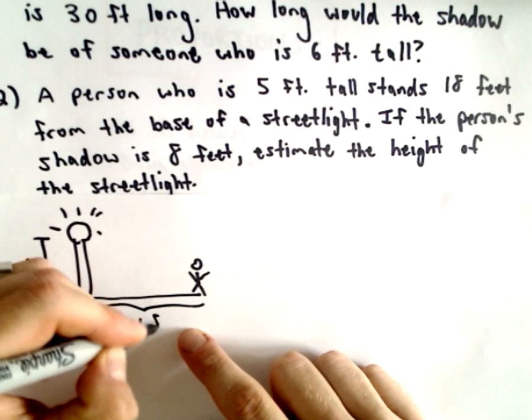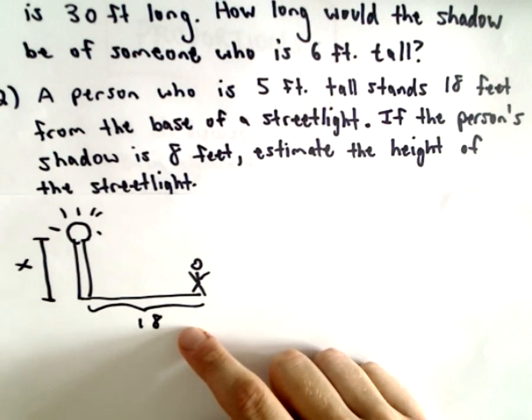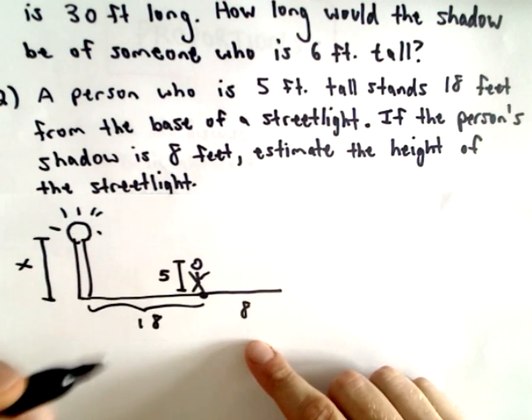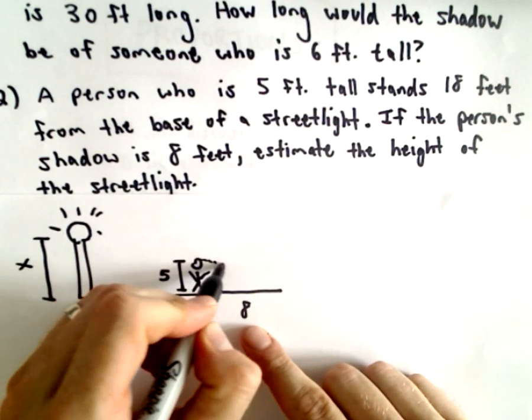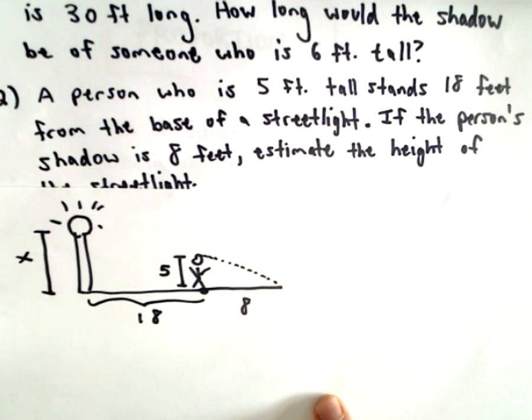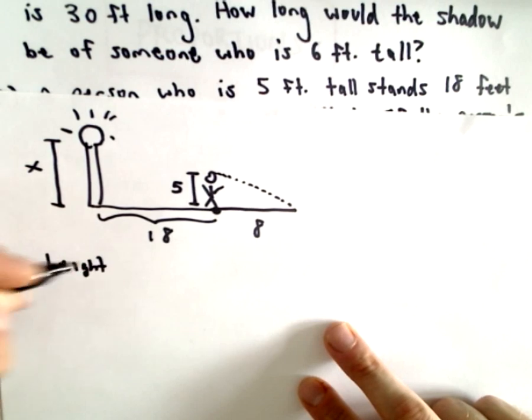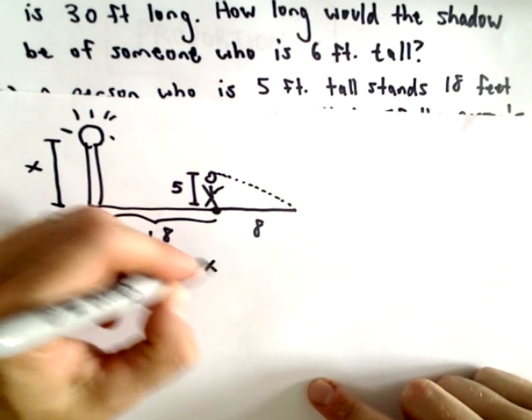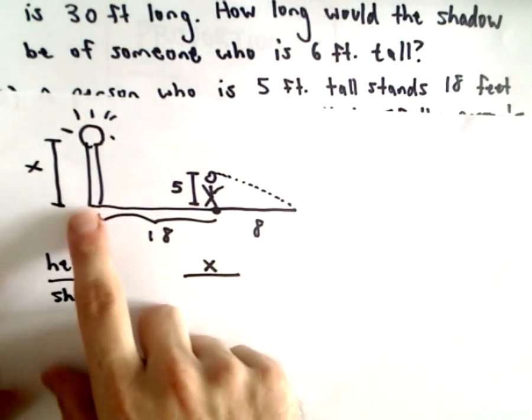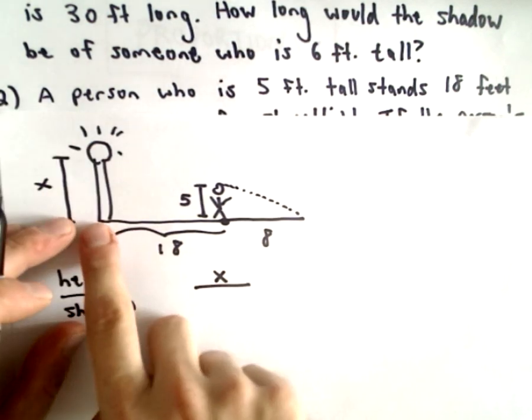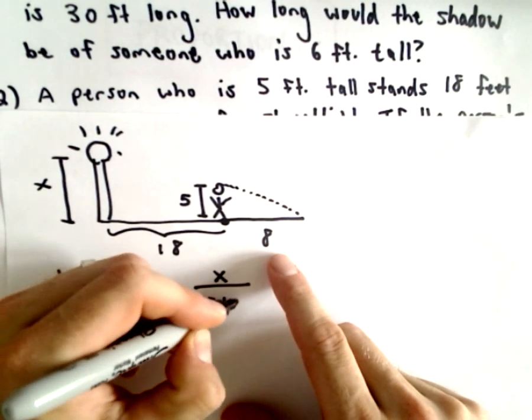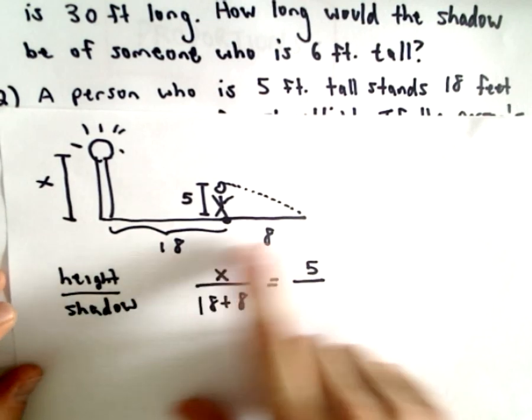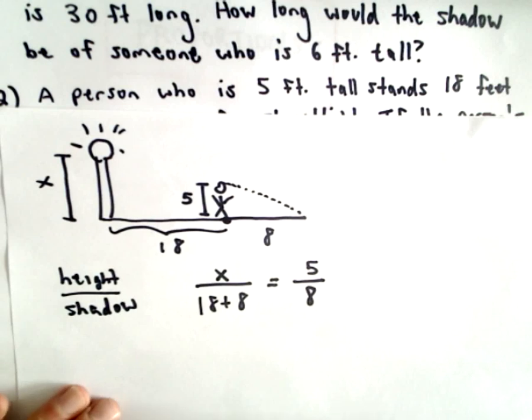Its height, that's what we don't know. That's what we're trying to figure out. Let's call that X. I always like making a little picture. Here's our person. We know that that person is 18 feet away from the base. We know that they are 5 foot tall. And then from there, their shadow is 8 feet. There's the shadow of the person, kind of blocking out that light. We're thinking about height to the length of the shadow. The height of the street lamp, that's X. The length of the shadow of the street light, that's going to be the 18 plus 8.